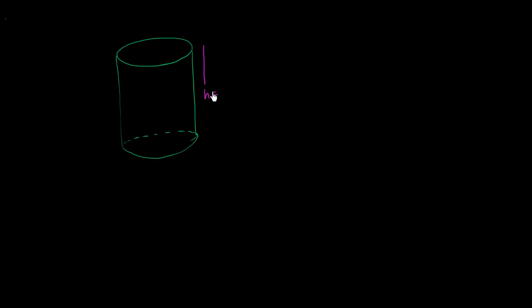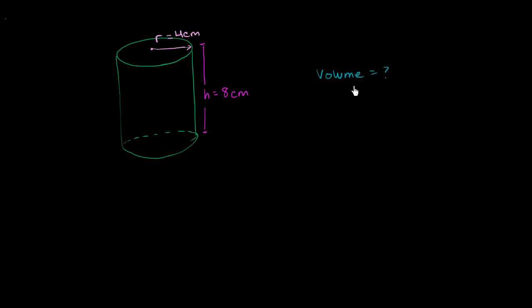Let's say that the height of my cylinder, h, is equal to 8 centimeters. That is my height. And then let's say that the radius of the top of my cylinder, or my soda can, is equal to 4 centimeters. So what is the volume going to be?